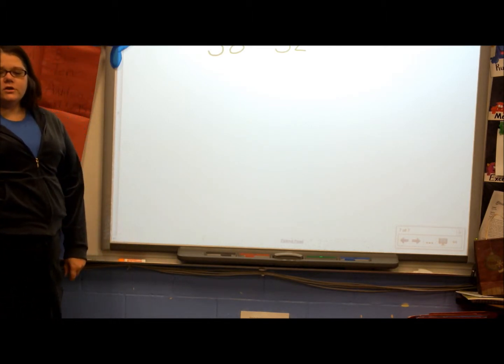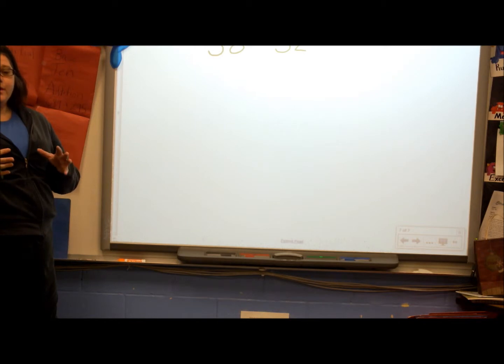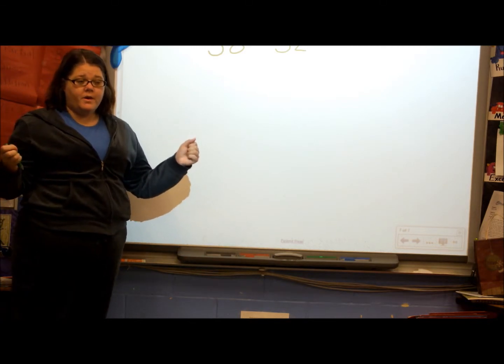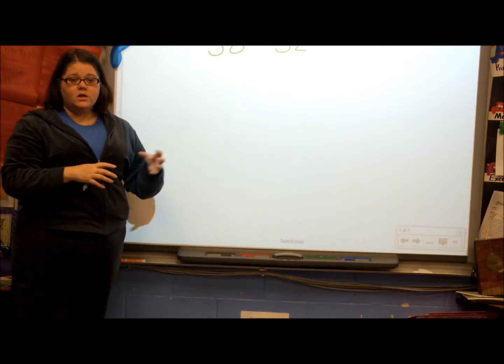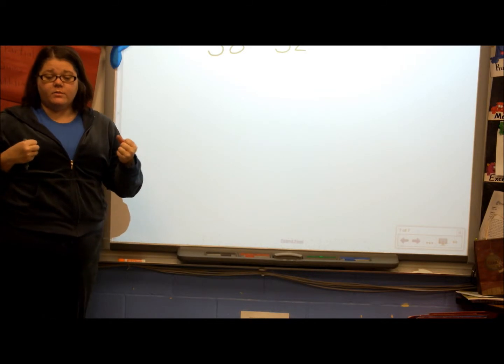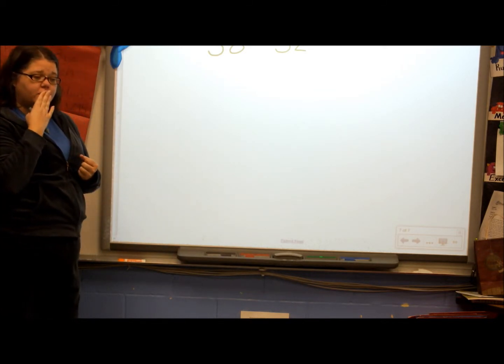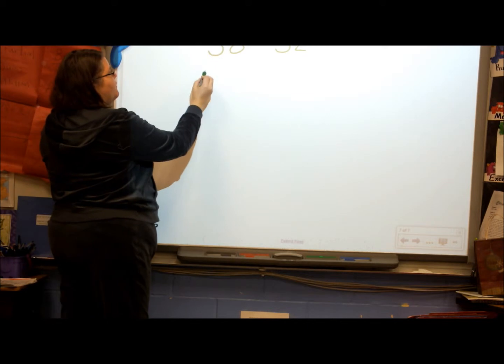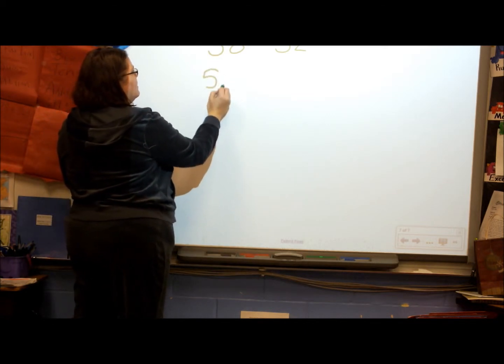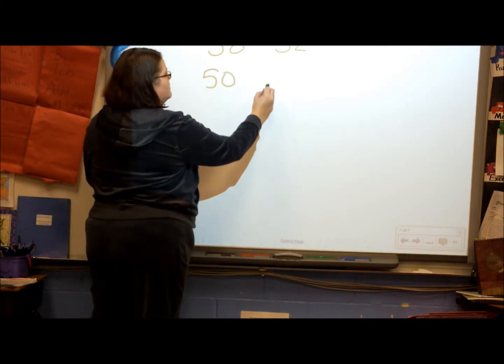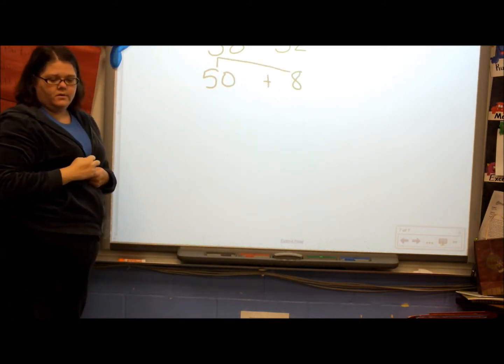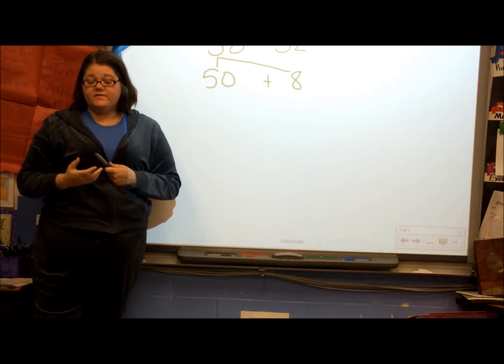When we do partial sums, we line them up. But for subtraction, it's kind of going to be a mixture of expanded form and our partial sums. So first thing we're going to do is expand out numbers. 58, pop it in and chew it up for me. If I stretch that out: 50 plus 8. That's the number 58.